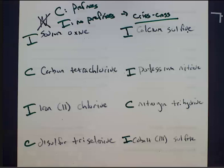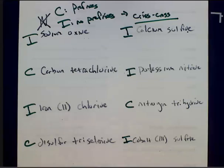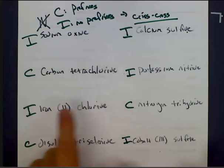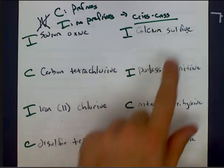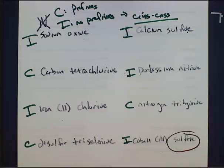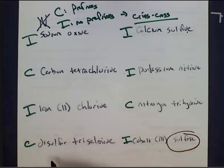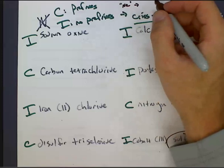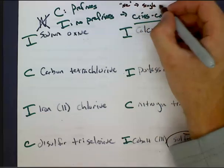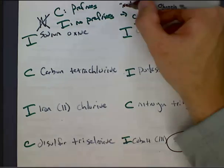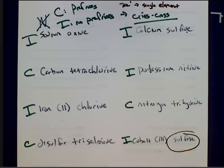Next thing we want to do is find any polyatomic ions and go ahead and circle them. We know we don't have any ions in covalent compounds, so we don't need to worry about those. Sodium oxide, no. Iron 2 chloride, no. Calcium sulfide, no. Potassium nitride, no. Cobalt-3 sulfite, sulfite is a polyatomic ion. But hey, how do we know sulfide isn't? If it ends in an ide, it's a single element. Ate and ite are the ones that are polyatomics.